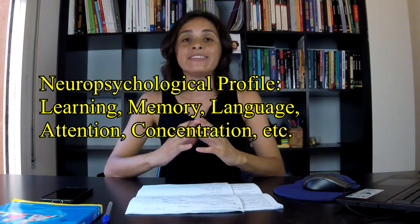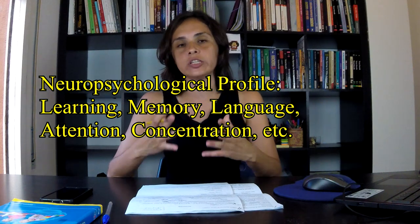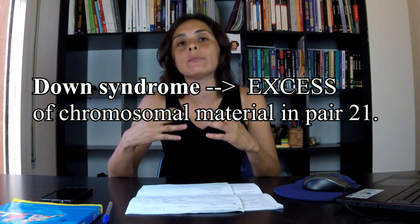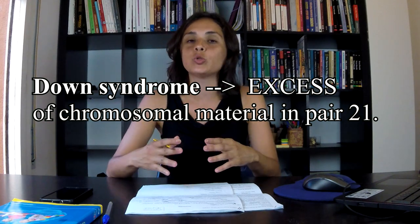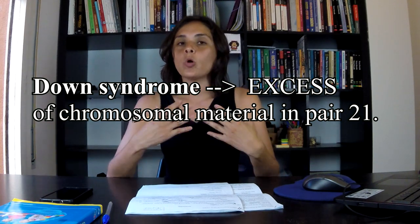Down syndrome is an alteration characterized by an excess of chromosomal material in pair 21. But what does this mean?